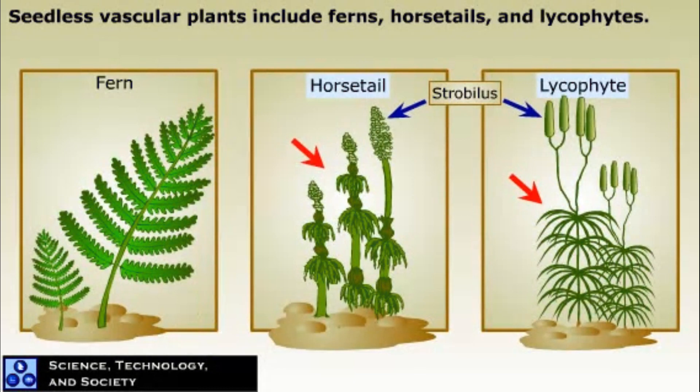Many ferns are recognizable by their finely divided leaves, or fronds. Horsetails and lycophytes were important members of the forest community in the Carboniferous Period, and some grew to the size of giant trees.